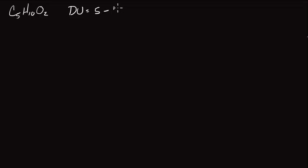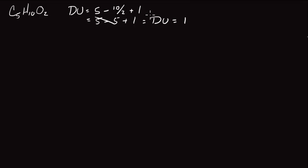The next molecule we're going to take a look at is a little bit more complicated, and its molecular formula is C5H10O2. Just like with the other two examples, the first thing we have to do is figure out our degrees of unsaturation. For this molecule, degrees of unsaturation equal 5 carbon atoms minus 10 hydrogens divided by 2, with no nitrogens or halogens, so we just add 1. That equals 5 minus 5 plus 1, and our final degree of unsaturation count equals 1.